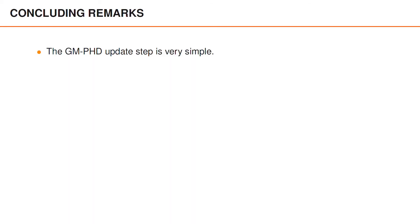To conclude, we have seen that the Gaussian mixture phd update is very simple. The computations mostly consist of a number of different Kalman filter updates, and the slightly more expensive parts, where we compute the Kalman gain and the posterior covariance, are only performed one time for every term in the predicted phd.